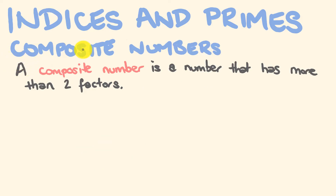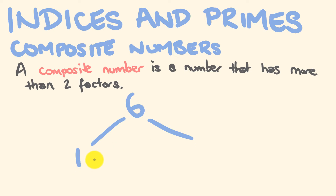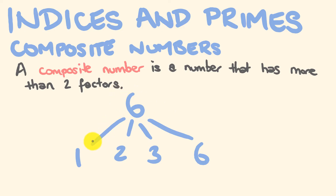So let's now have a look at composite numbers. A composite number is a number that has more than 2 factors. An example of this is 6. 6 is a composite number because the numbers 1 and 6 go into 6 — 1 times 6 equals 6 — but we also have two other numbers that go into 6, which are 2 and 3, because 2 times 3 is also equal to 6. So because 6 has 4 factors, 6 is a composite number.